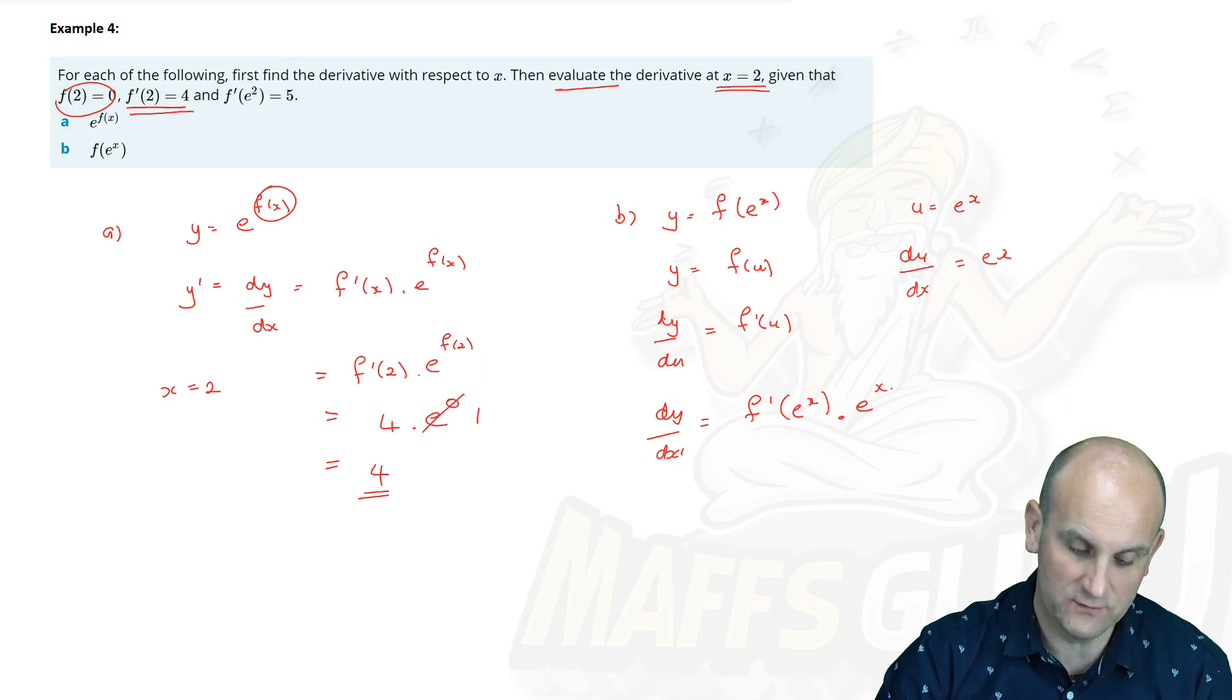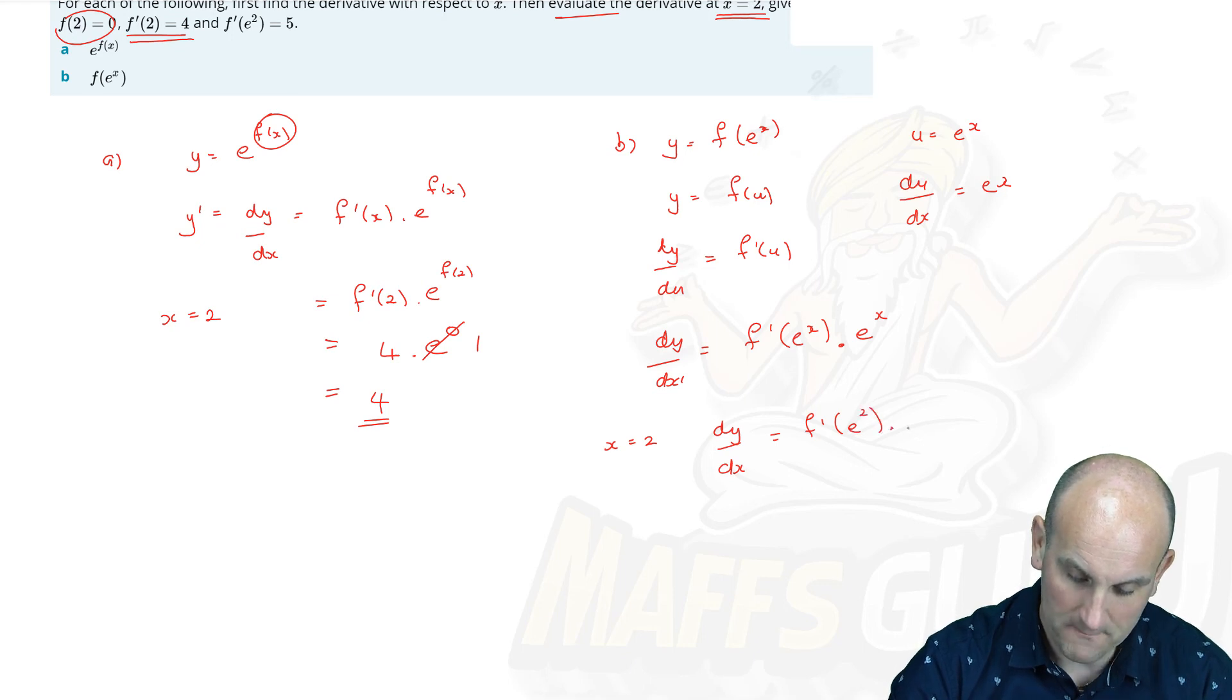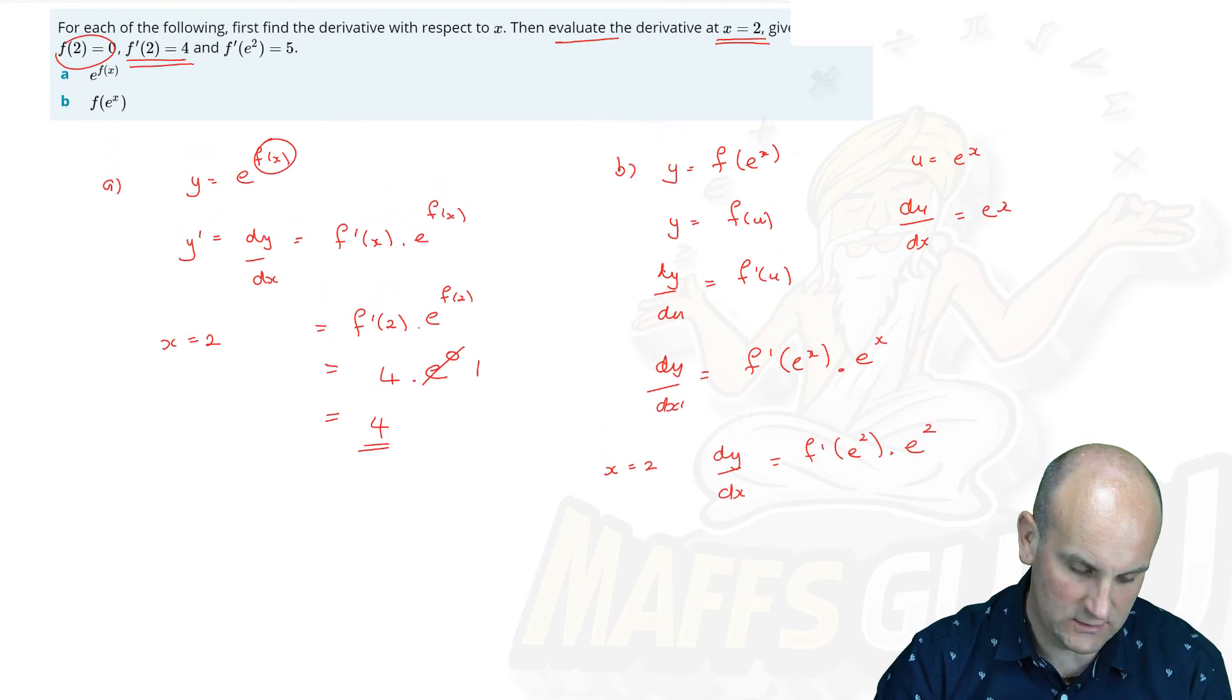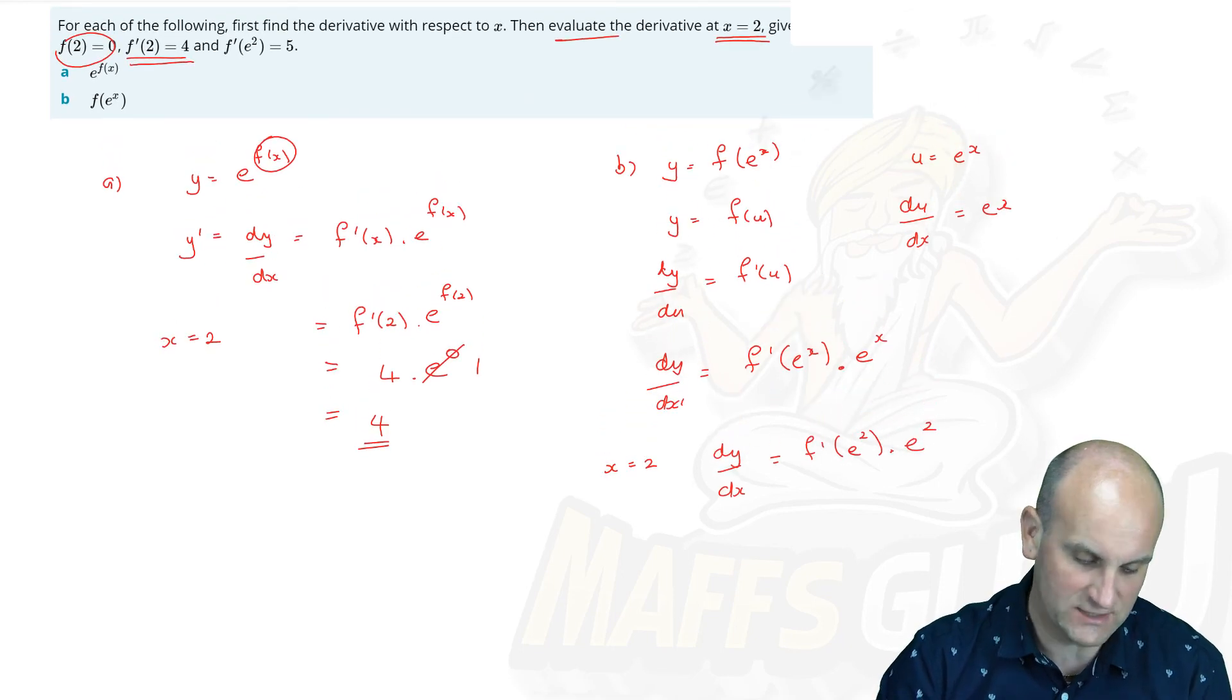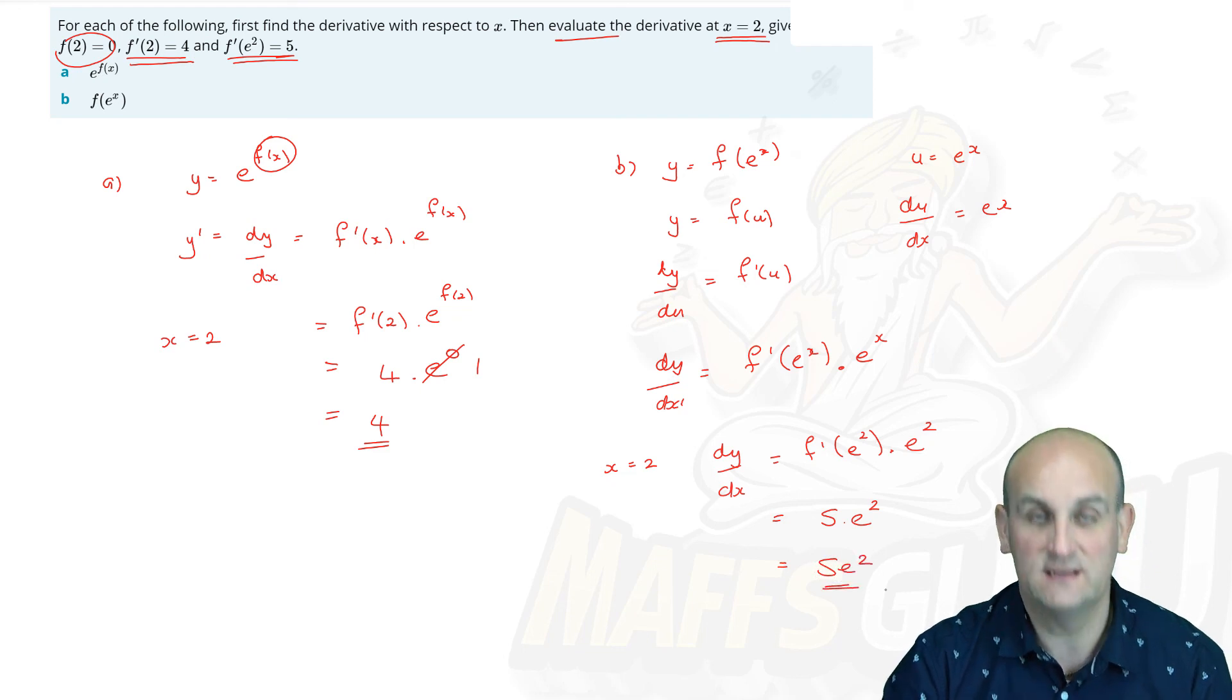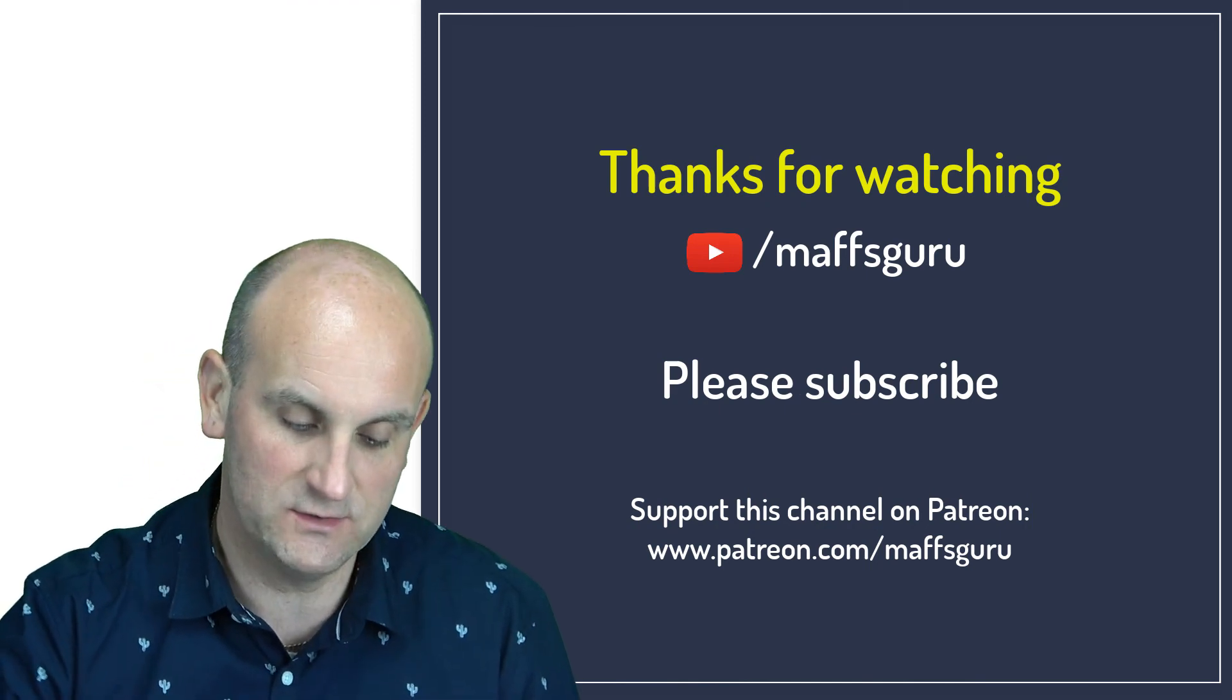...we know that dy/dx is equal to f'(e²), multiplied by the e². Well, we now need to look and go, well, do we know what the f'(e²) is? Well, of course we do. Thank you very much. It is 5. And so that becomes 5 times e², or just 5e². See what it is? It's just a trick. They gave you all the information in there. You just needed to know the chain rule.